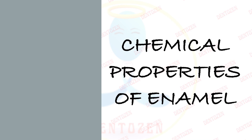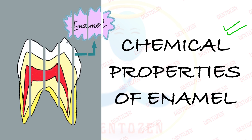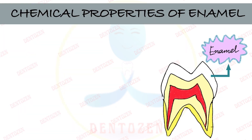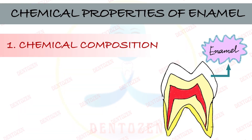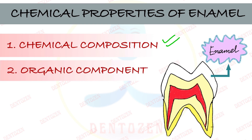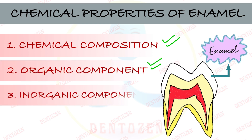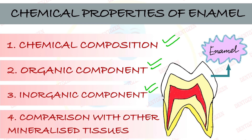Welcome back to Dentals. Today we are going to discuss chemical properties of enamel, covering four parts: first, the chemical composition of enamel; second, the organic component; third, the inorganic component — very important; and fourth, we will compare the composition of enamel with other hard tissues.